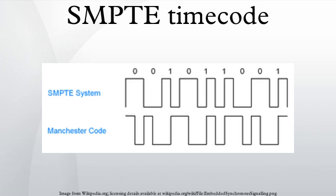CTL timecode is SMPTE timecode embedded in the control track of a video tape. Visible timecode, also known as burnt-in timecode or BITC, has the numbers burnt into the video image so that humans can easily read the timecode. Videotapes that are duplicated with these timecode numbers burnt into the video are known as window dubs. Film labels such as keycode are also used.